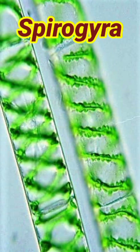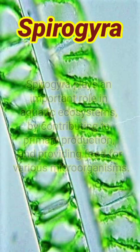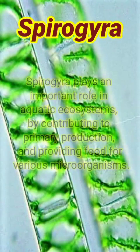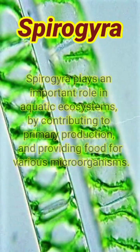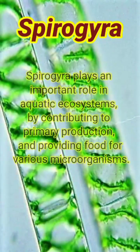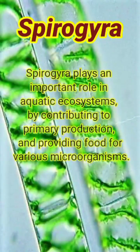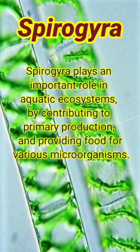Spirogyra plays an important role in aquatic ecosystems by contributing to primary production and providing food for various microorganisms.